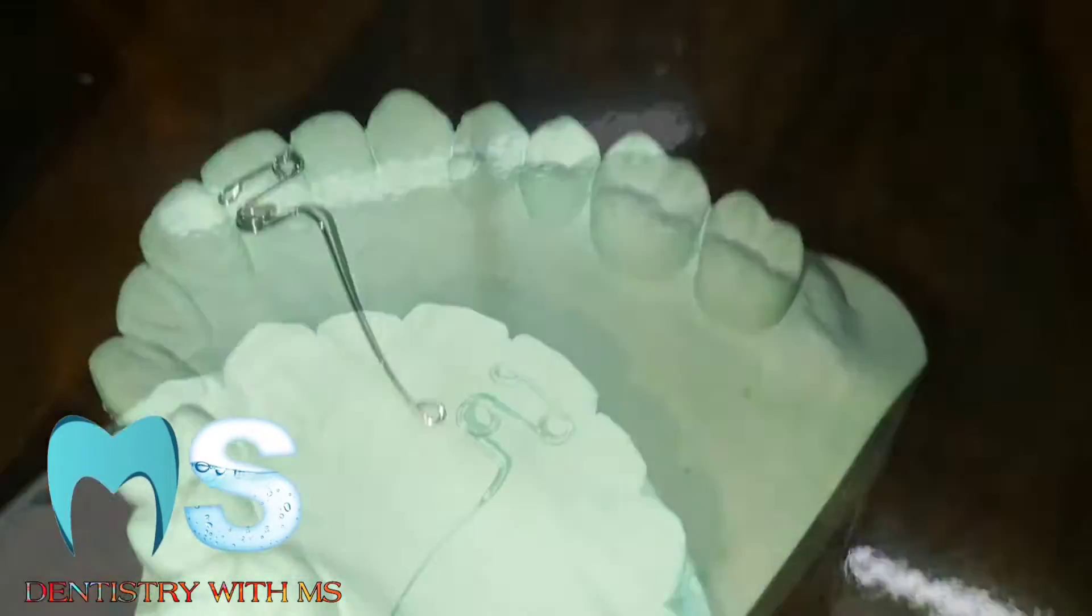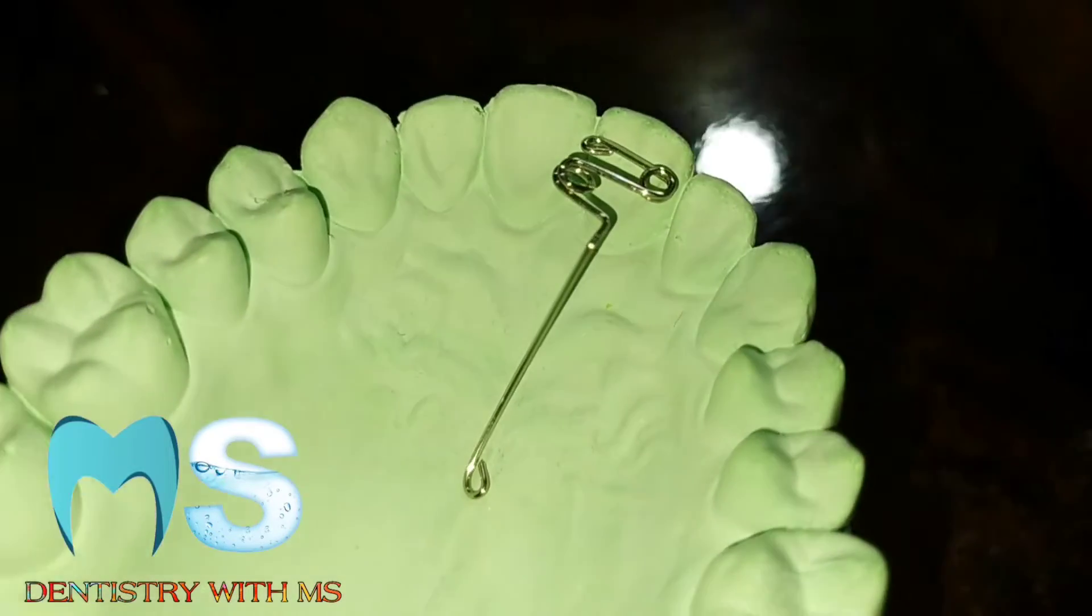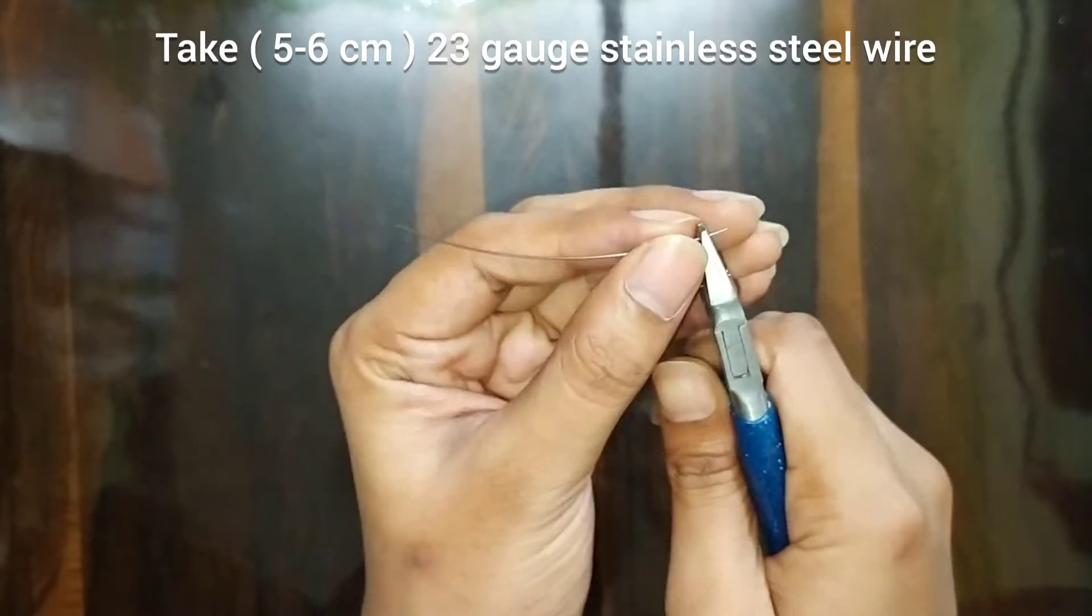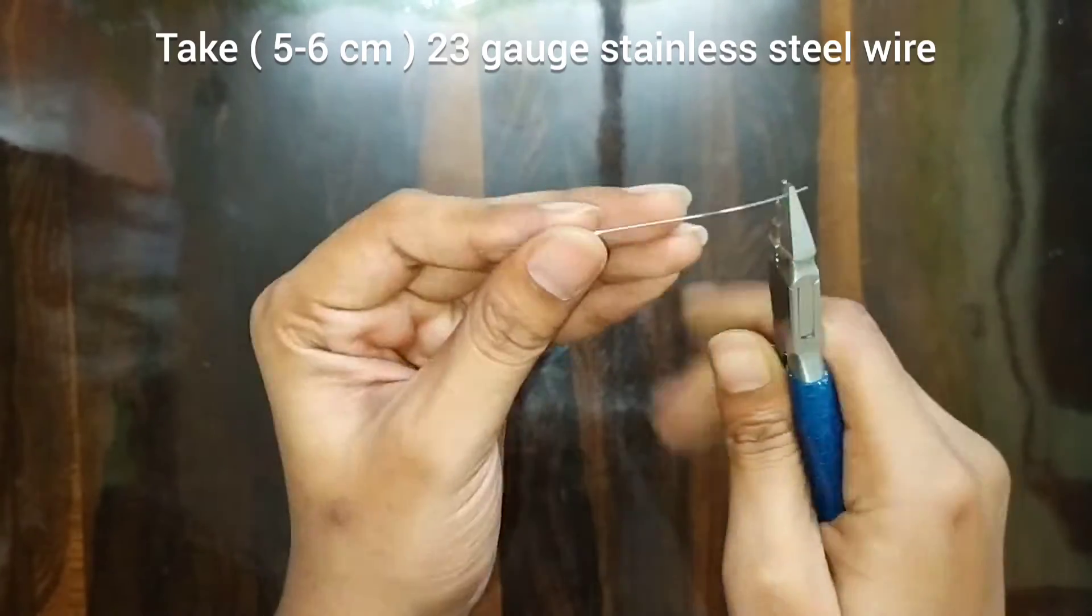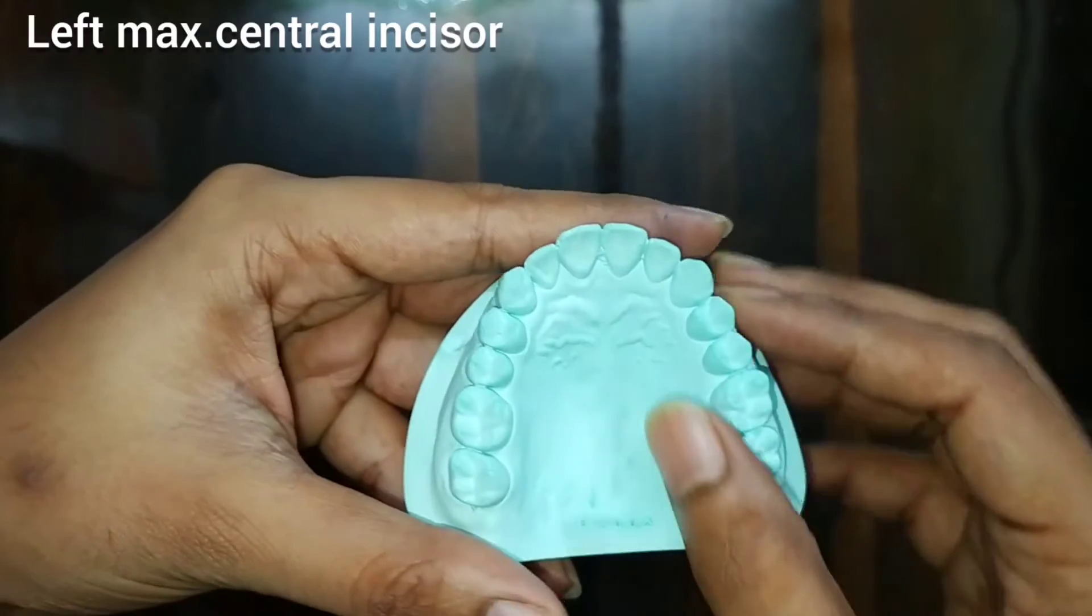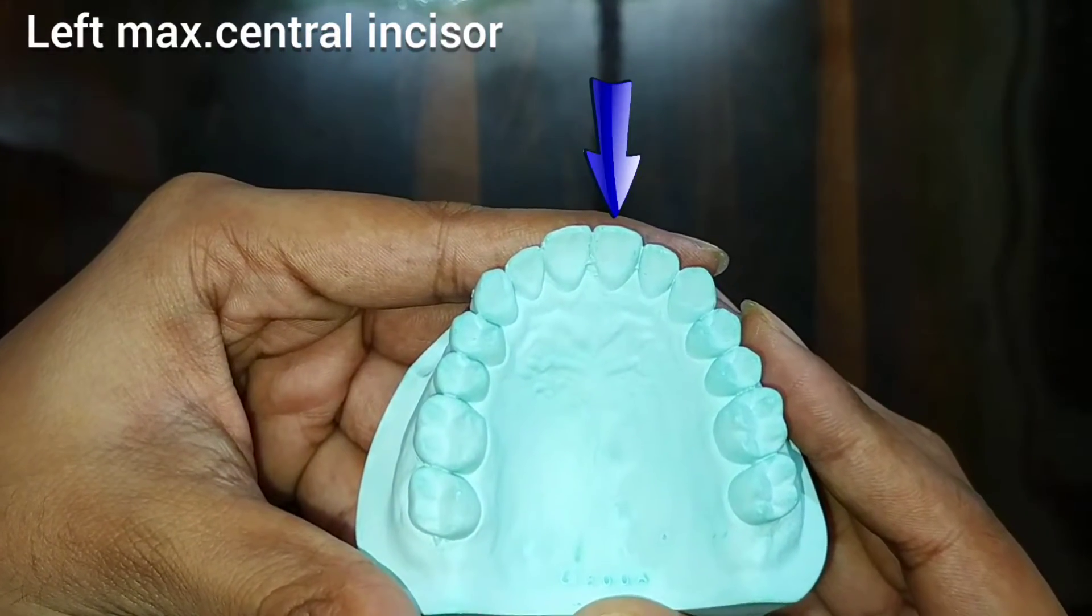Hey everyone, welcome to my channel. This time we are going to make the Z spring, also called a double cantilever, which is used in orthodontic treatments. First, we will take 5 to 6 centimeter 23 gauge stainless steel wire and make it straight. In this video, we are going to make the Z spring on maxillary left central incisor.